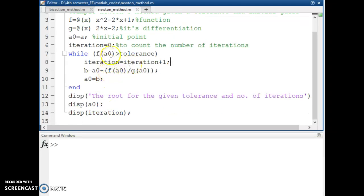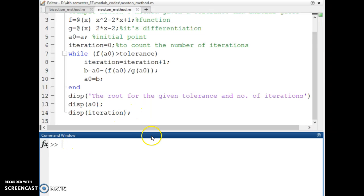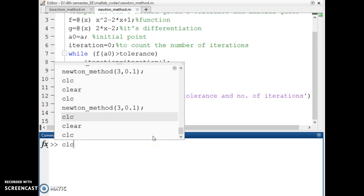Thus I compute the iterations until the function value is less than the tolerance level. If the function value is less than tolerance level, we just display the root and display the number of iterations. So let's run the program.